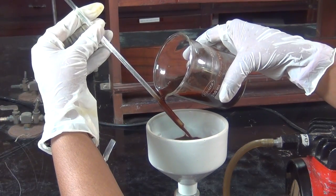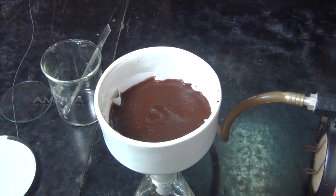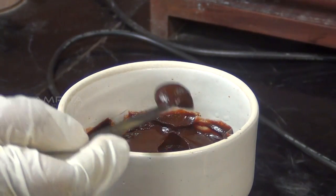Filter the precipitate of ferric hydroxide so formed through a Buchner funnel. Wash the precipitate with distilled water and transfer it into a watch glass.